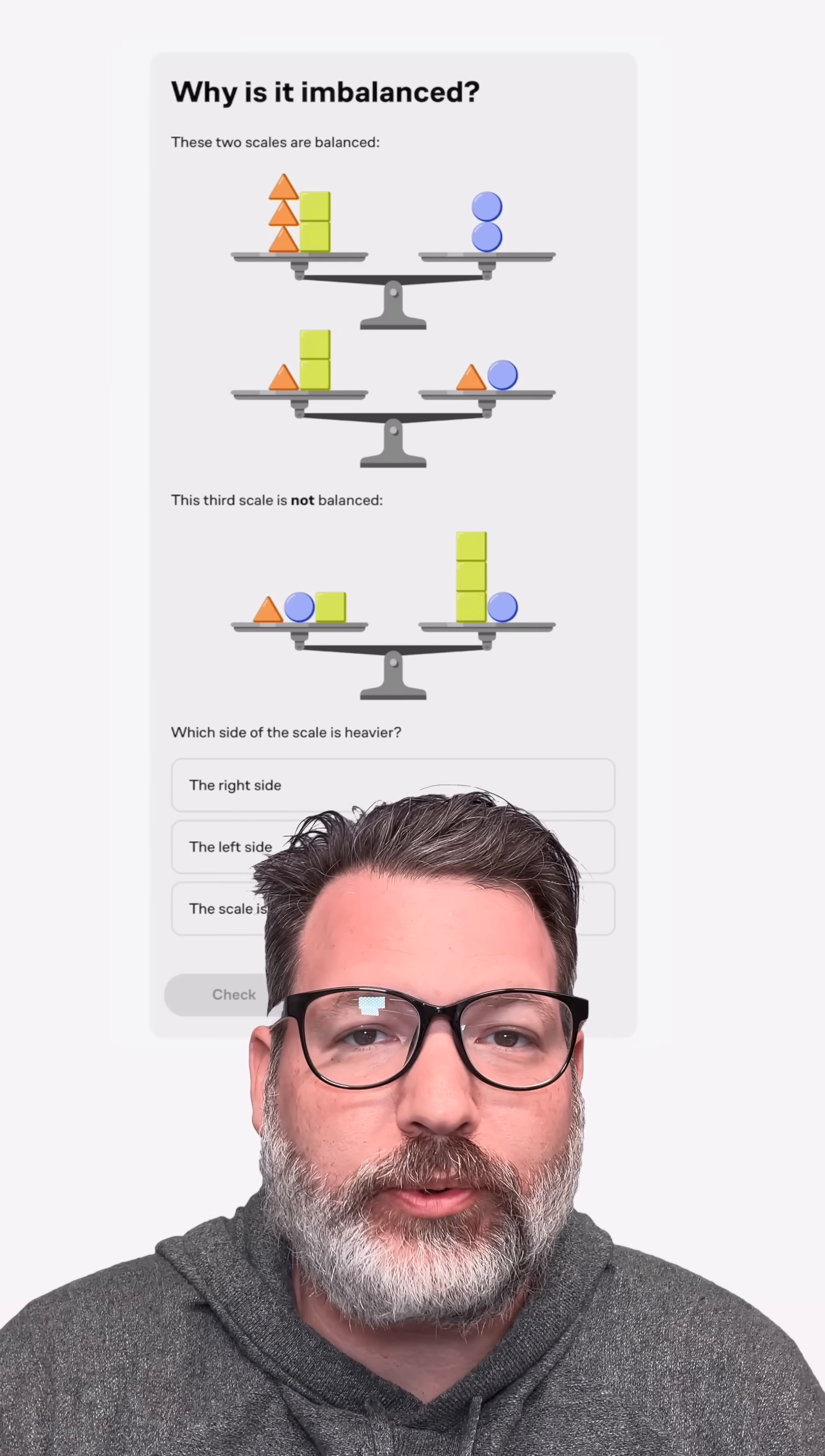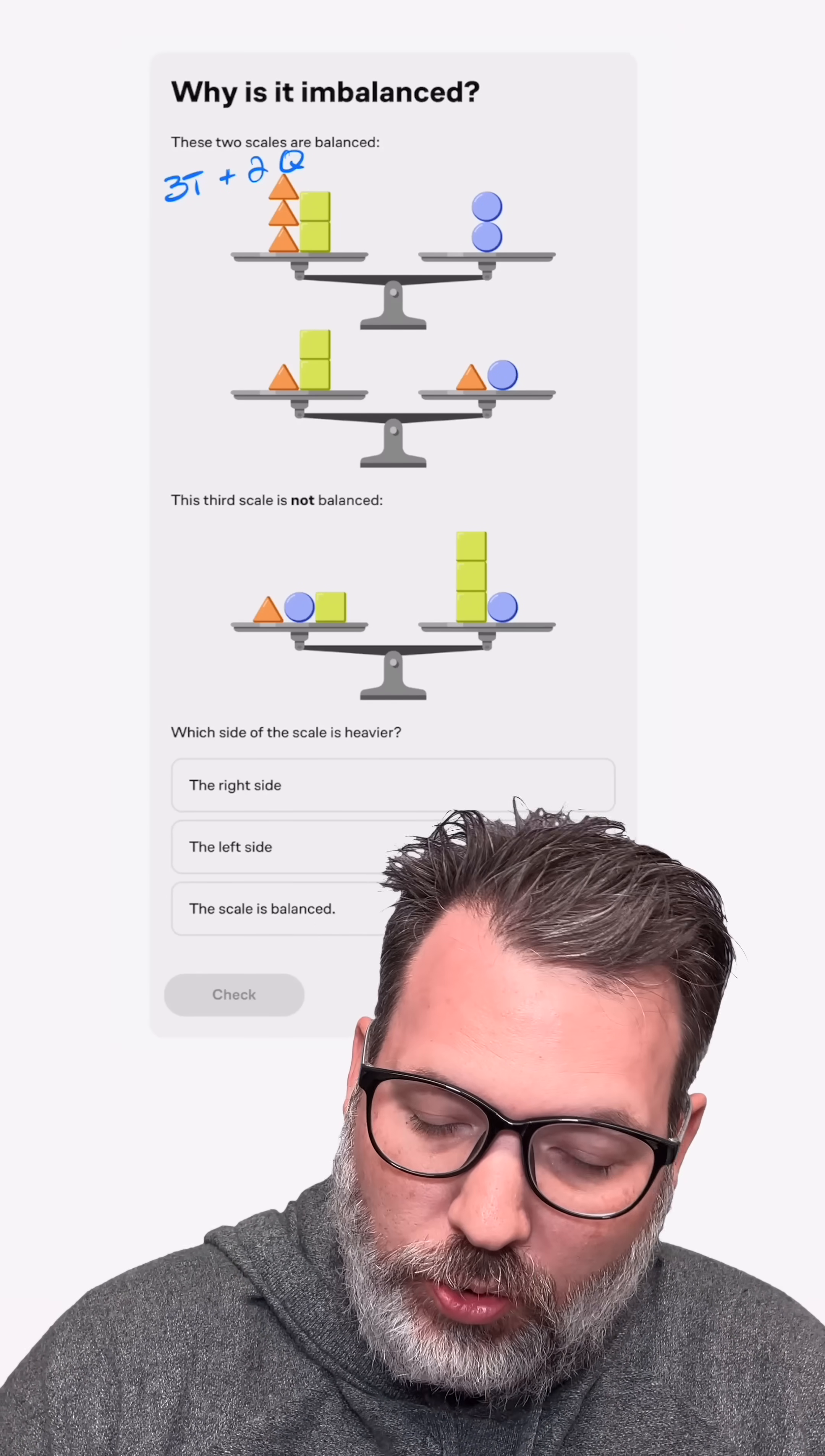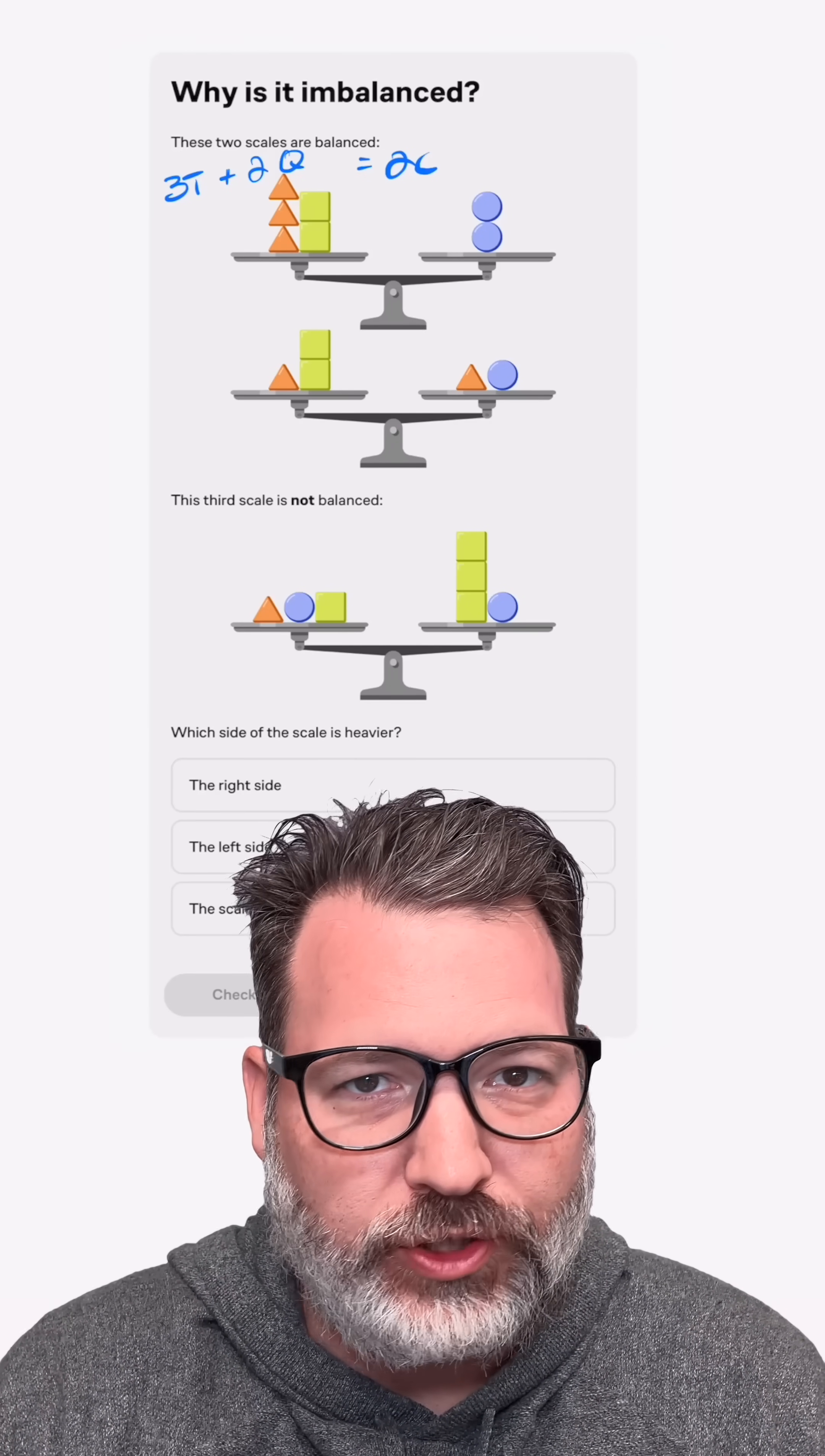Now, I love symbolic algebra as much as the next guy, probably more, quite honestly, but I want you to resist the urge to set up an equation here, like 3t plus 2q, q for square of course, equals 2c, or something like that. Let's stay away from the symbols for just a second.